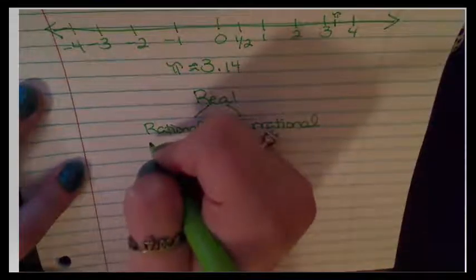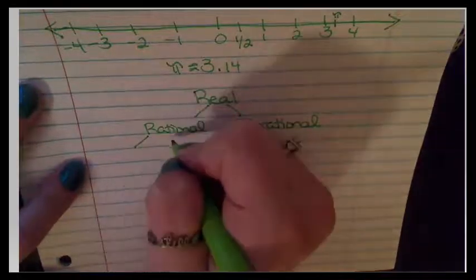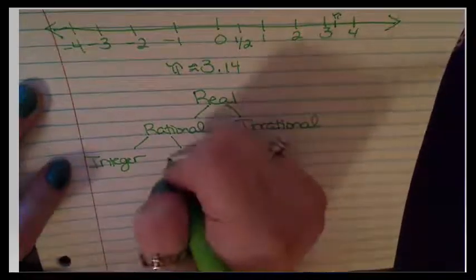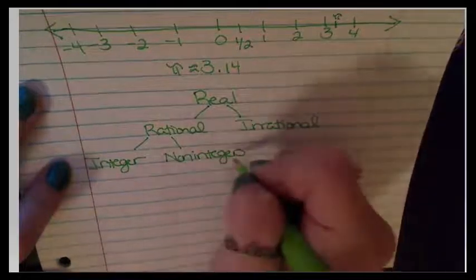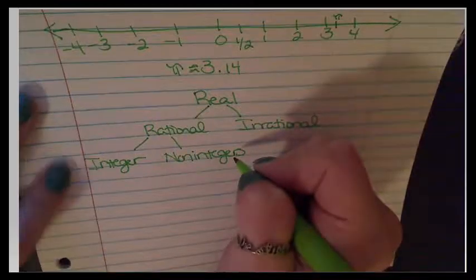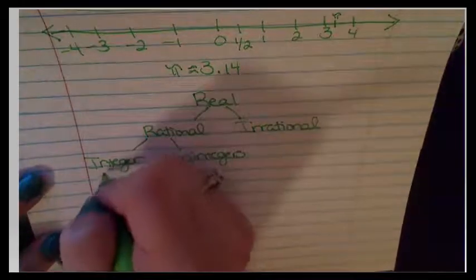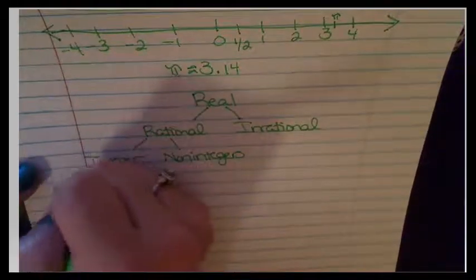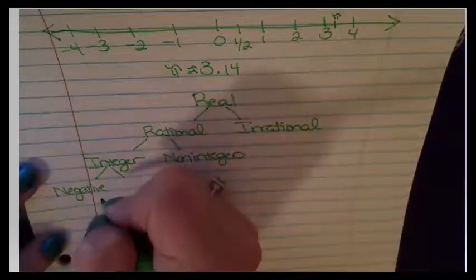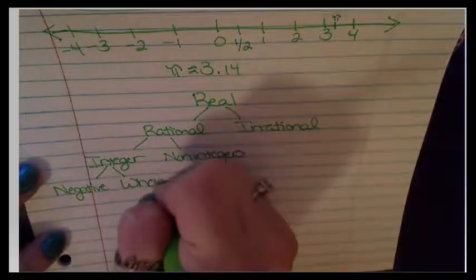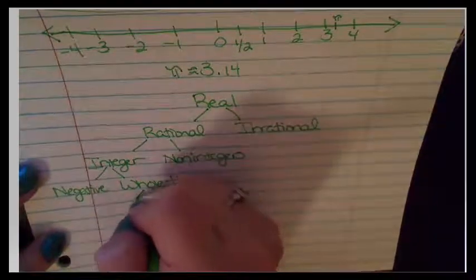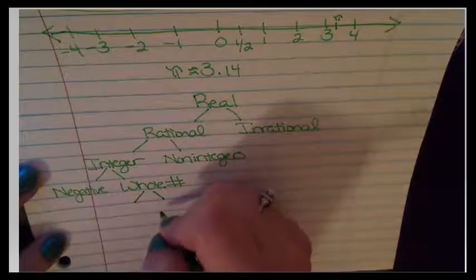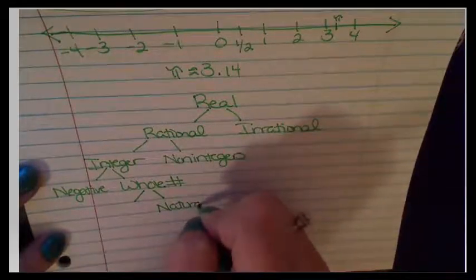But if you're rational, then you can be either an integer or you can be what's called non-integers. We didn't really talk about those. You don't really have to worry about those for the purposes of this class. If you're an integer, then either you're a negative number or you're a whole number. If you're a whole number, then either you are the naturals or you're the number zero.